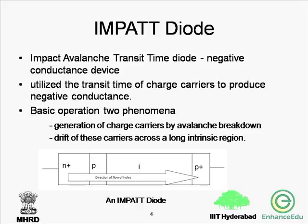The basic operation of these diodes involves two phenomena: first, the generation of charge carriers by avalanche breakdown, and second, the drift of these carriers across the long intrinsic region. The structure of such a device is N+, P, I, P+, where I is nothing but the intrinsic layer. The arrow depicts the flow of the charge carriers.